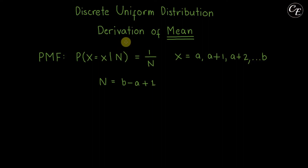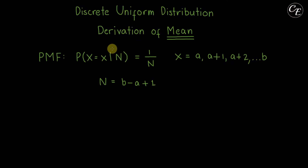Hello everyone. In this video, I'm going to show you how to derive the mean for the discrete uniform distribution. In the derivation process, we need to use the probability mass function, or PMF, for this distribution, which is 1 over n, where n is a constant.